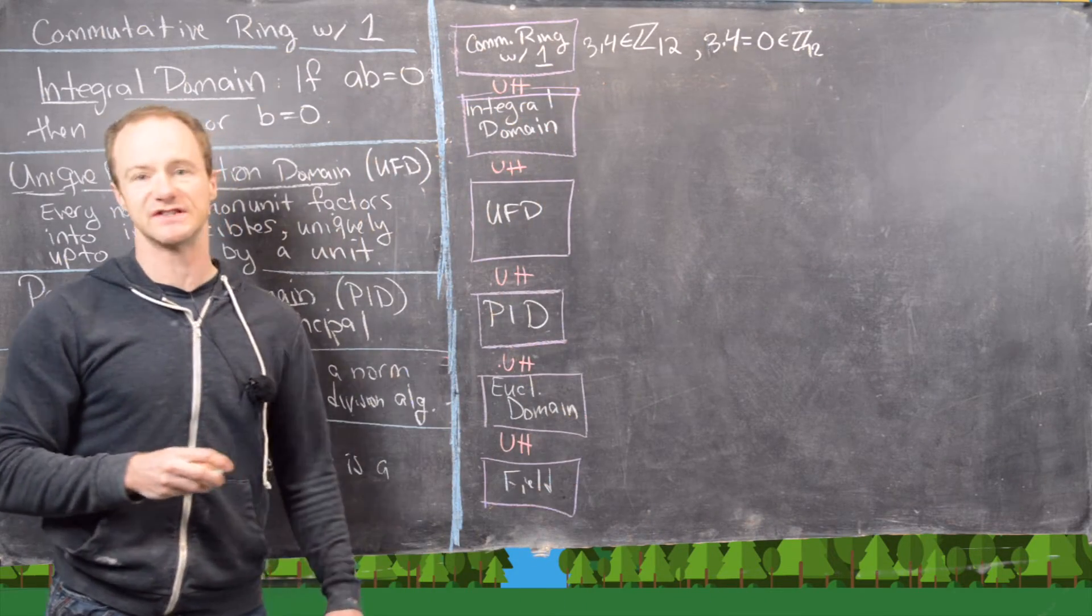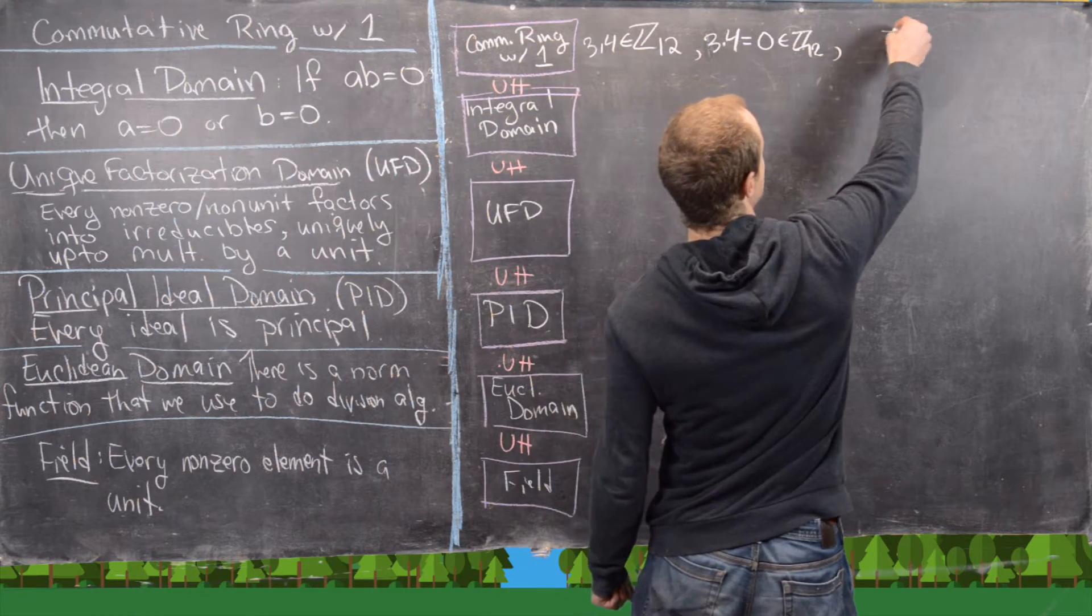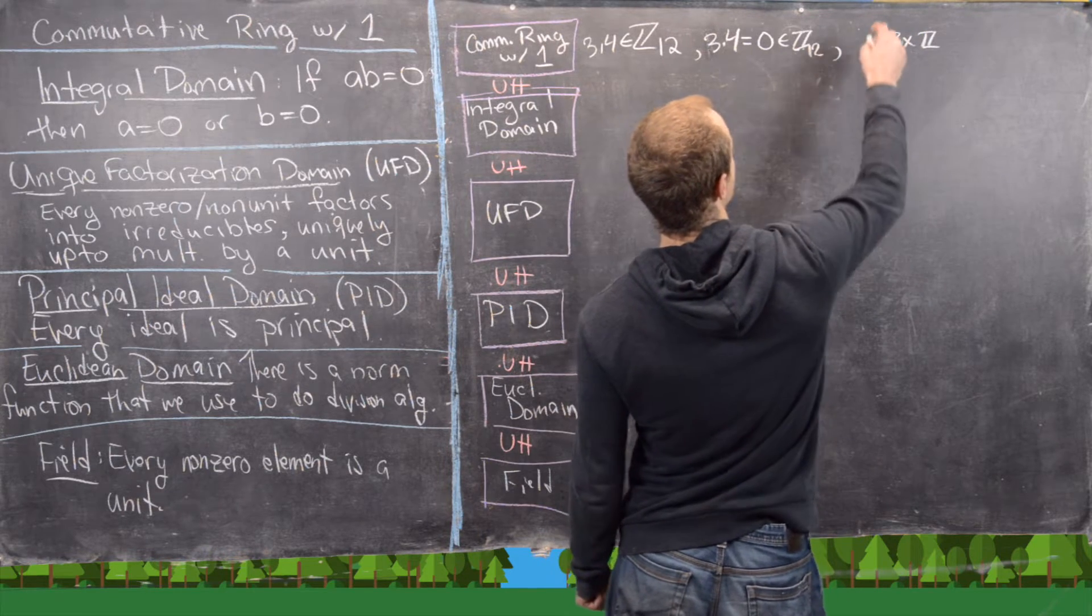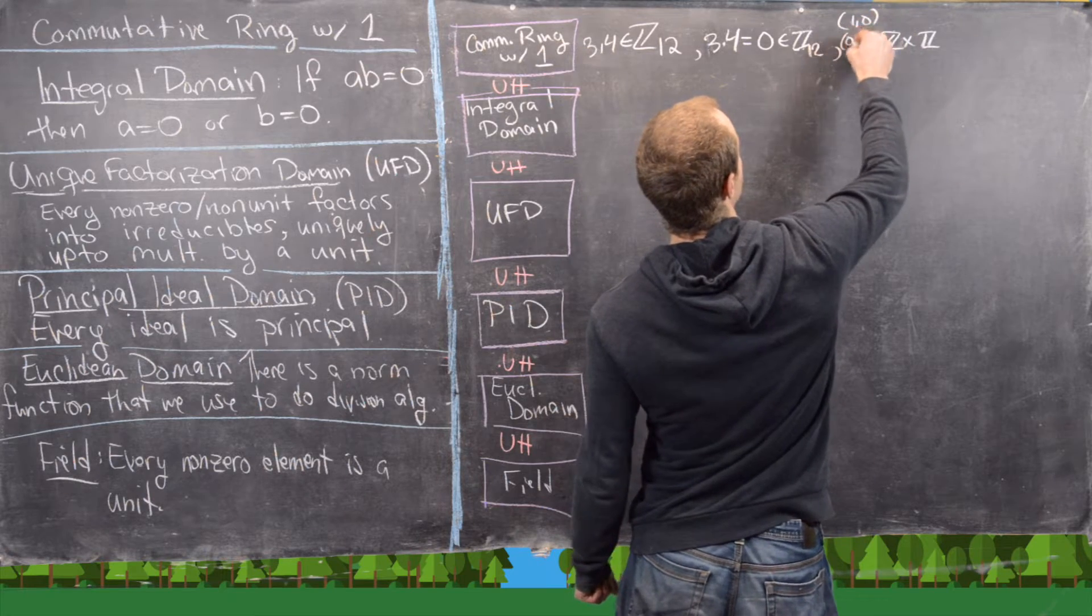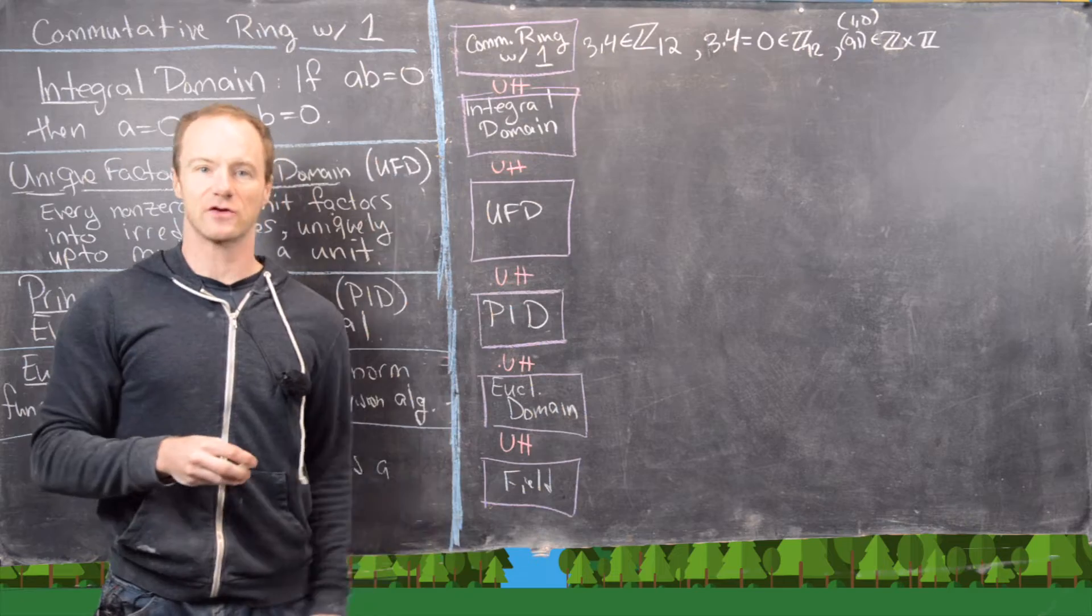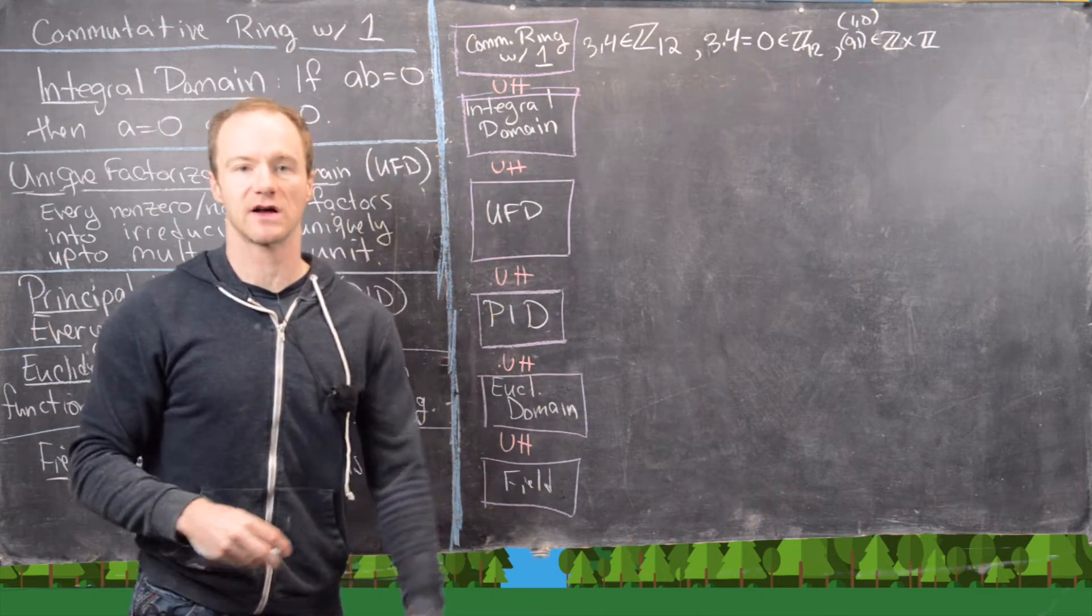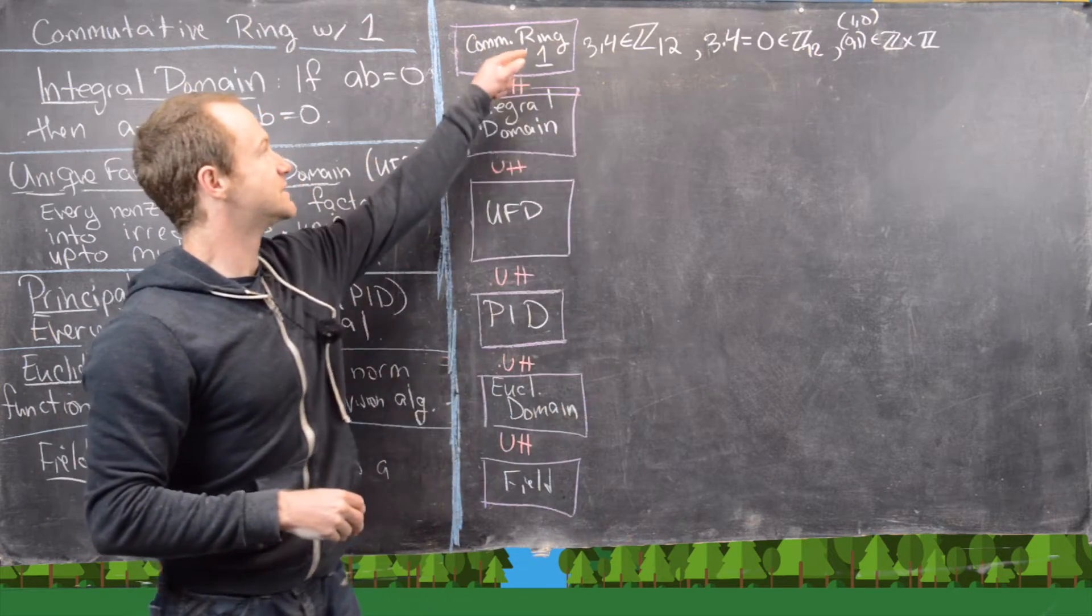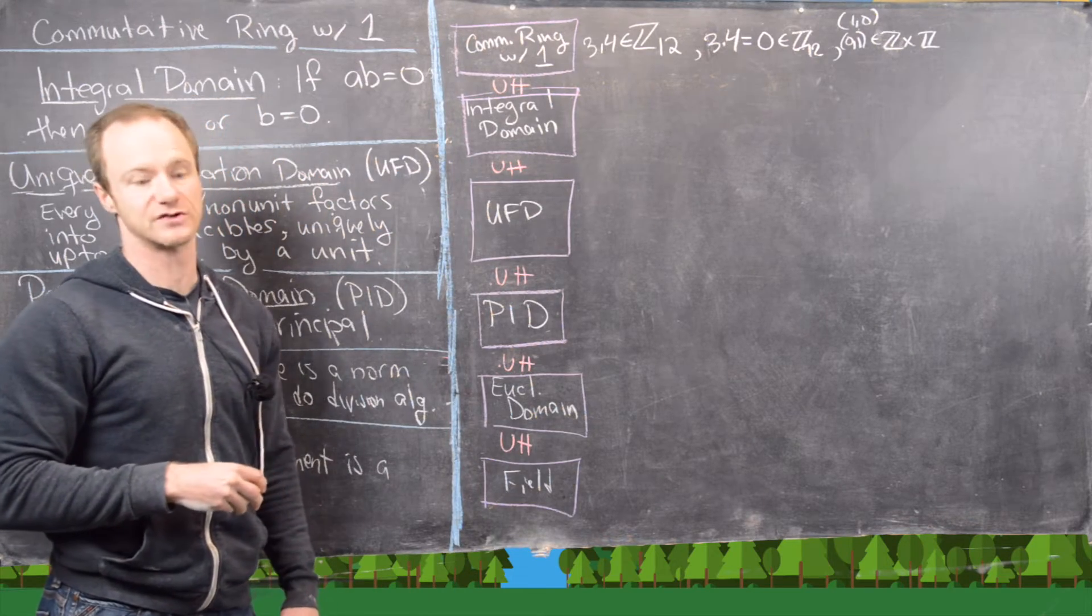So that makes them each 0 divisors. Here's another nice example. We can take Z cross Z. And we can take the elements (1, 0) and (0, 1) in Z cross Z. Notice neither of those are 0. But if we take their product we get (0, 0) which is 0 inside of Z cross Z. So there's some examples of commutative rings with one that are not integral domains.